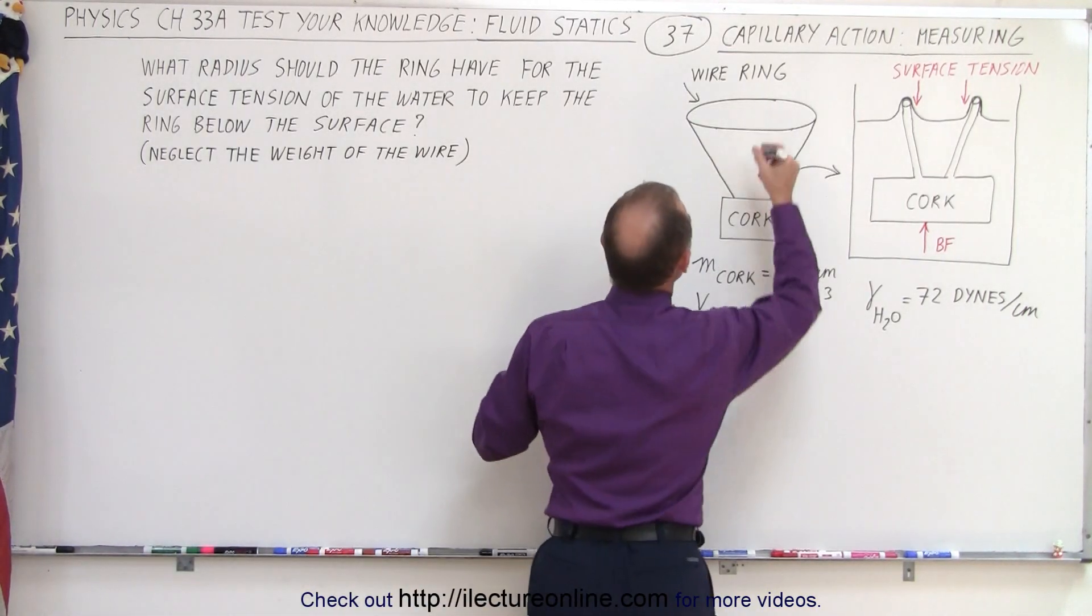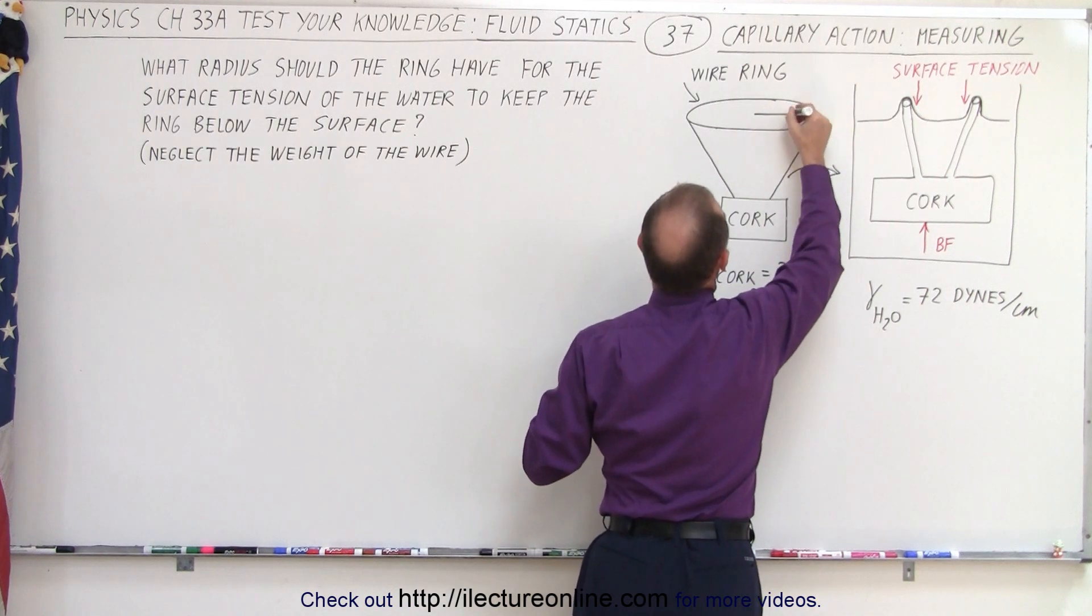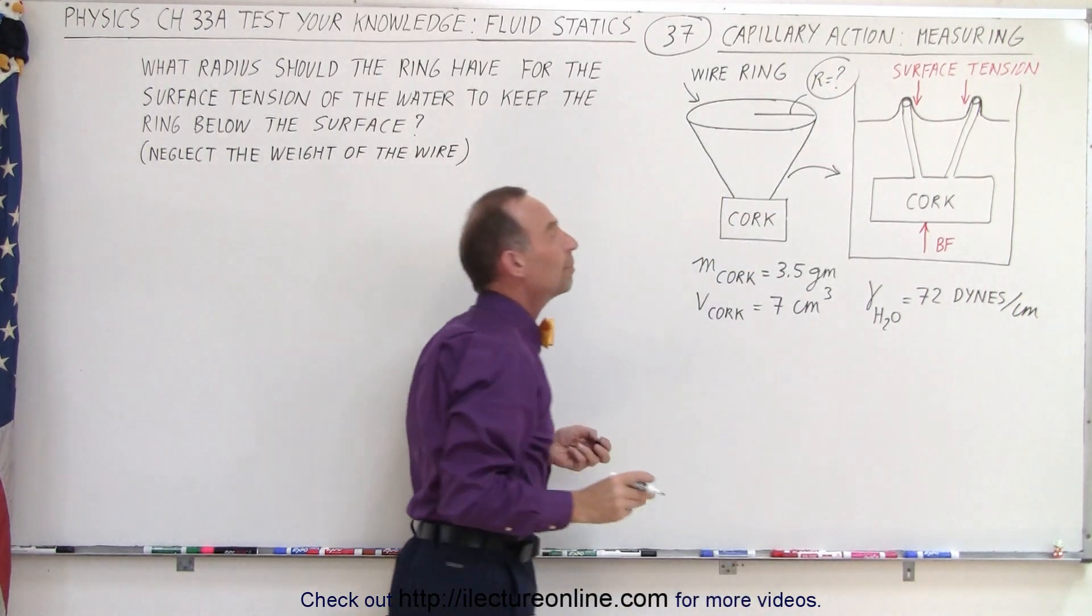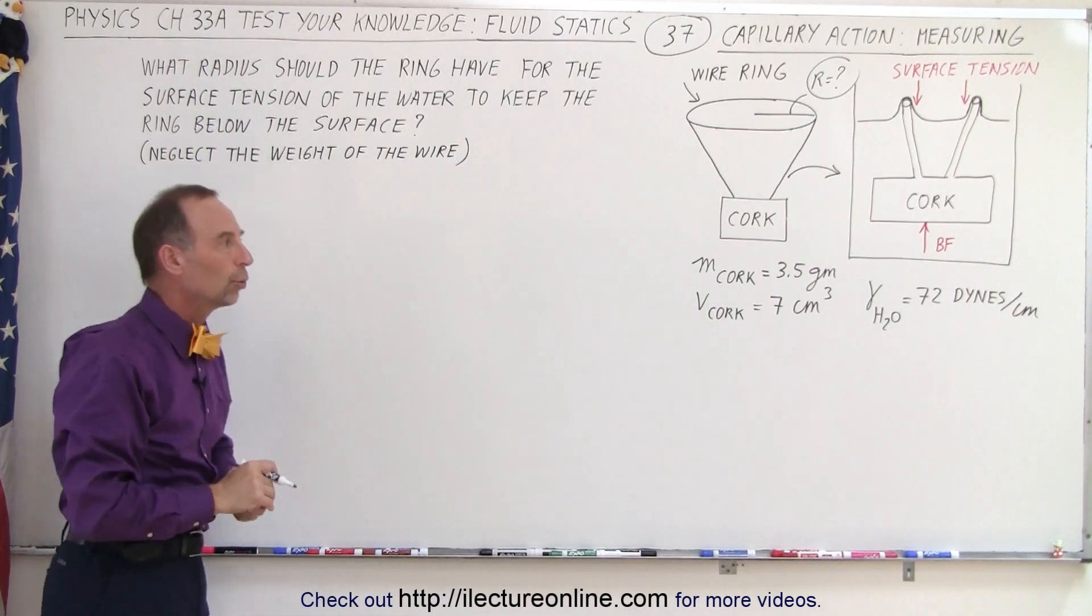We're going to solve for the radius of the ring. R equals question mark - how big does that ring need to be so that it will stay below the water surface?